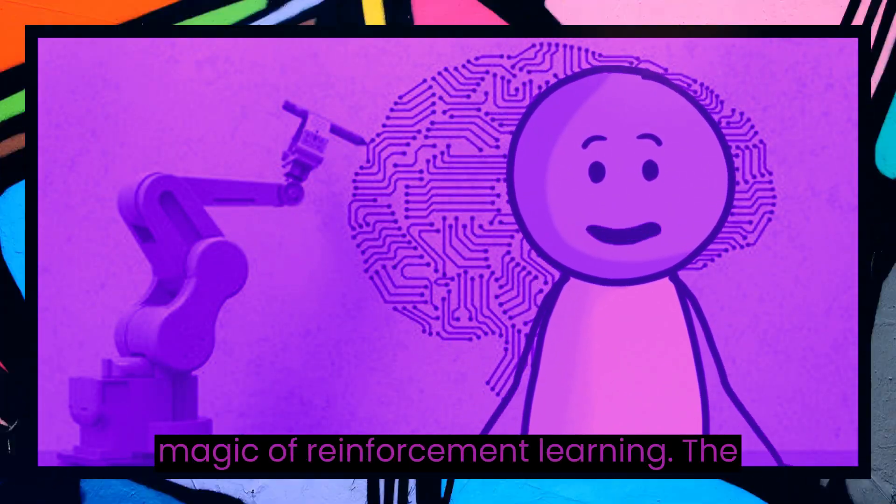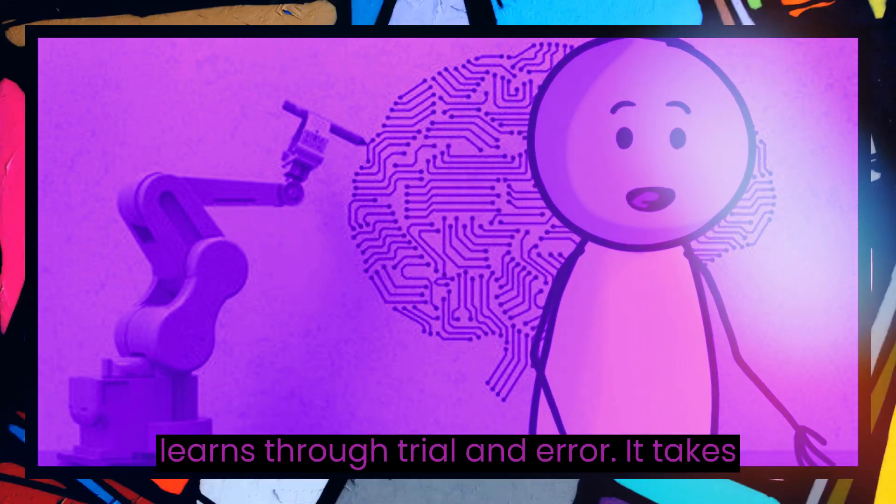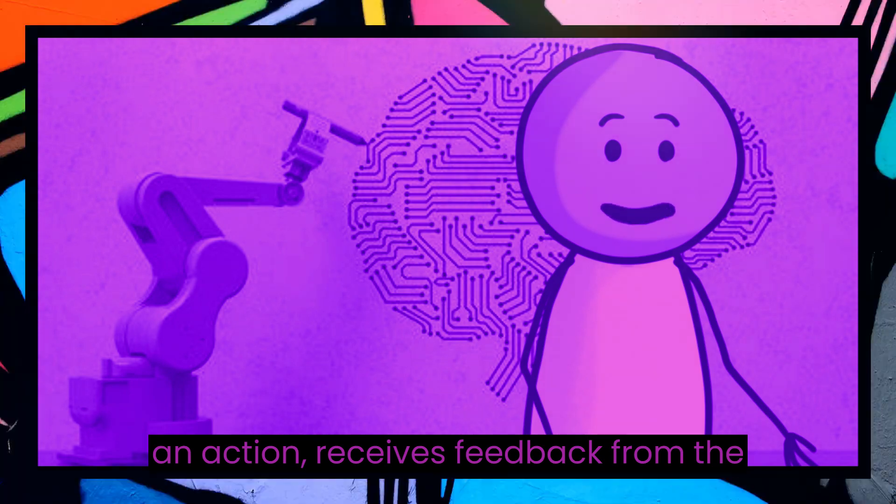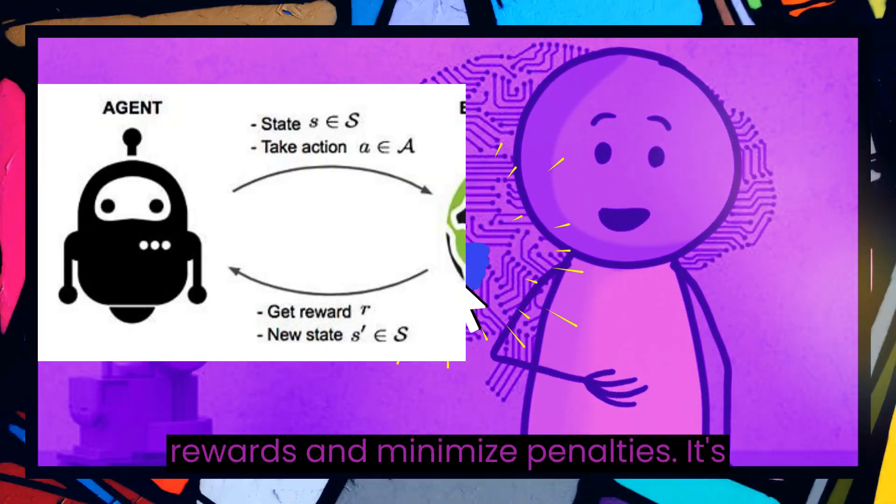Here's the magic of reinforcement learning. The agent learns through trial and error. It takes an action, receives feedback from the environment, and adjusts its strategy to maximize rewards and minimize penalties. It's like teaching a dog new tricks.